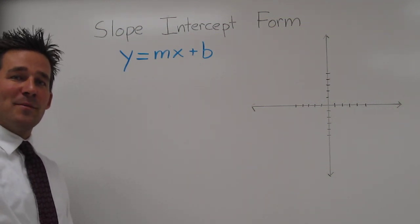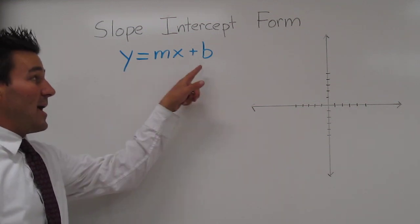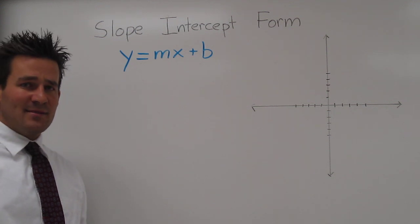Now, slope-intercept form is the form y equals mx plus b, where m and b are constants. That means they're numbers.